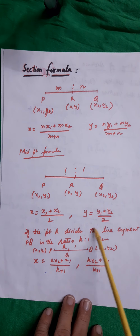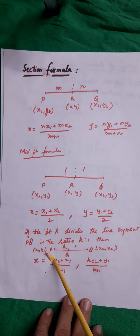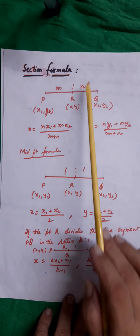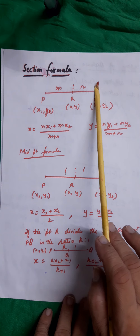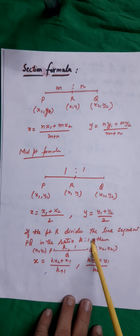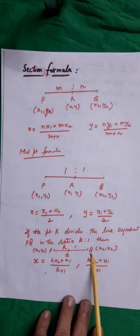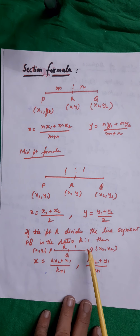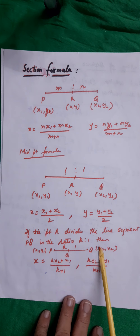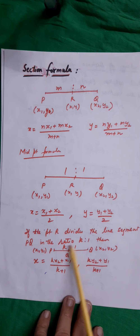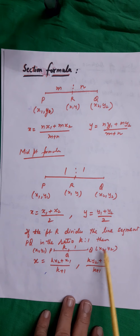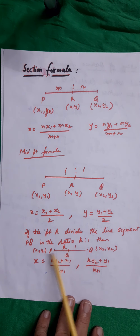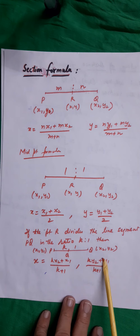If point R divides line segment PQ in the ratio k:1 instead of m:n, then x = (k·x2 + 1·x1)/(k+1) and y = (k·y2 + 1·y1)/(k+1).